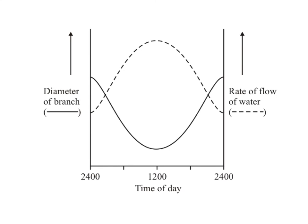On this graph, we have the diameter of the branch. You can see the diameter of the trunk or branch gets narrower during the day and at midday, and during the night time it is at its widest. Here we also have the rate of flow of water plotted alongside.